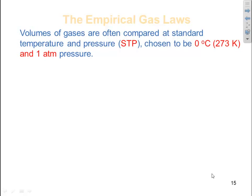Volumes of gases are often compared at standard temperature and pressure, which we refer to as STP. It's chosen to be zero degrees C, 273 Kelvin, and one atmosphere of pressure. So any time you see STP, we're talking about standard temperature and pressure — those are your conditions.